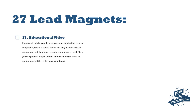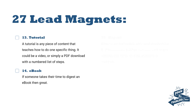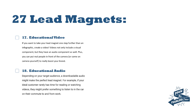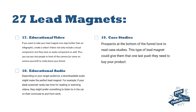Number seventeen is an educational video — you could do a tutorial in video format. It's a great way to visualize what you're doing, and it also has an audio component so if people can't get in front of the screen they can still follow along. Number eighteen is educational audio — an MP3 or podcast. It's a great lead magnet because people can listen to it on the move, like on their commute to and from work.